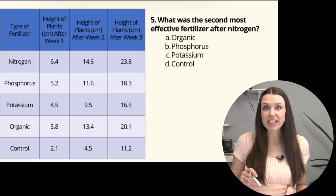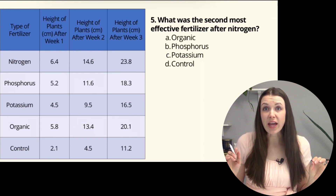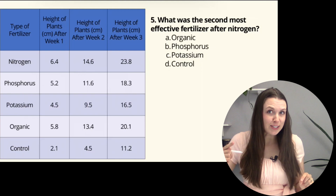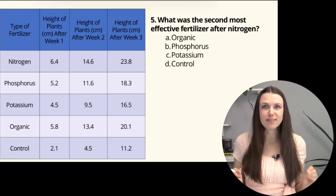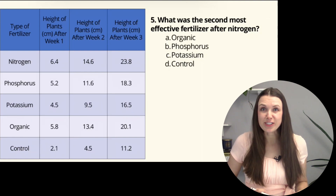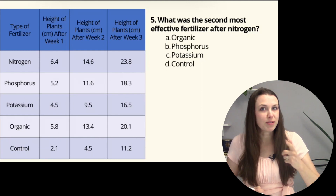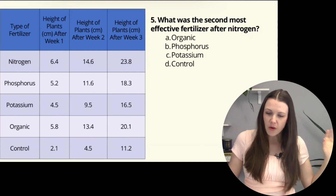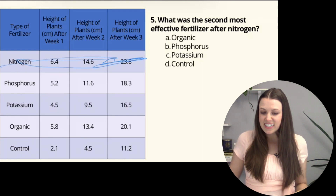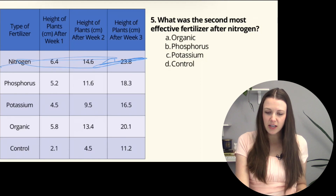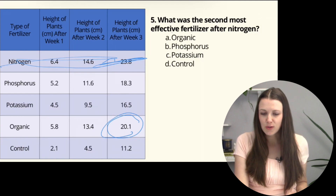Question 4: What was the second most effective fertilizer after nitrogen? Notice how this question actually hints at the answer to the previous one. Pay close attention, because sometimes on the science test you can find answers in other questions. Nitrogen is out, so looking at the second highest value — organic at 20.1 centimeters — the answer is A.